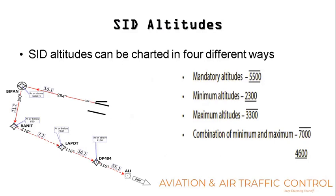SID altitude restrictions can be of four types: mandatory altitude, minimum altitude, maximum altitude, and a combination of minimum and maximum. Mandatory altitude at a waypoint is the altitude the aircraft must maintain, shown with bars both below and above the value. Minimum altitude is shown with a bar below the level, meaning the aircraft should fly at or above this level. Maximum altitude has a bar above the level, meaning the aircraft should fly at or below. A combination is shown as a block of levels between two bars.